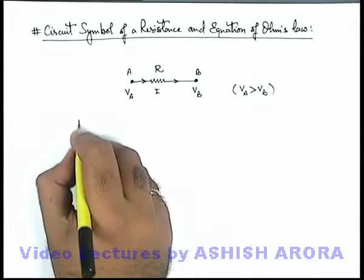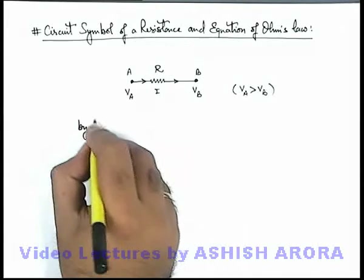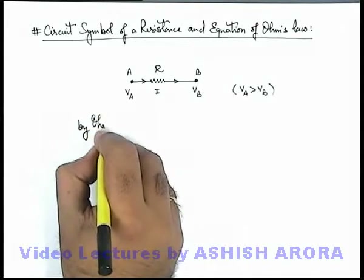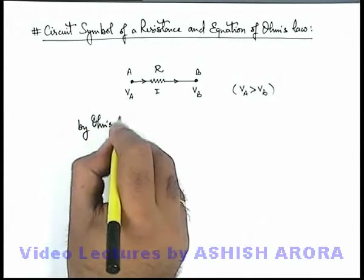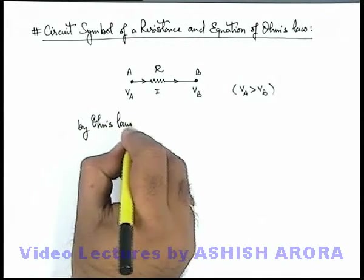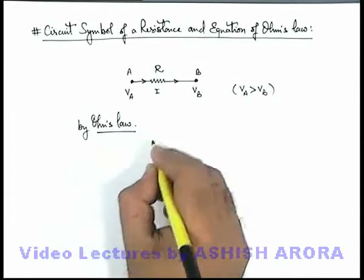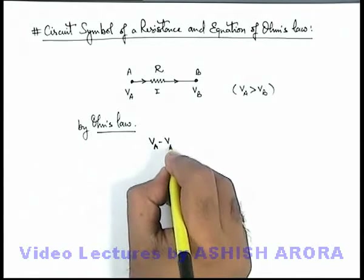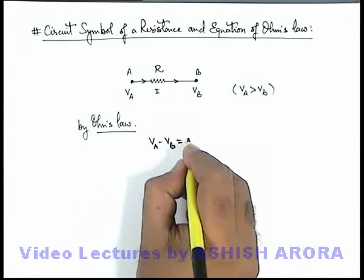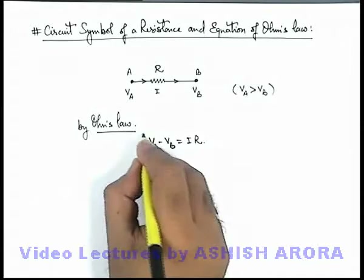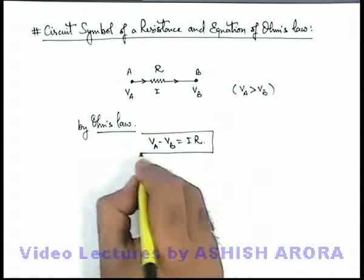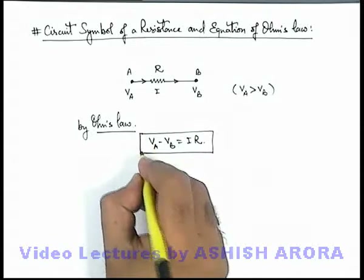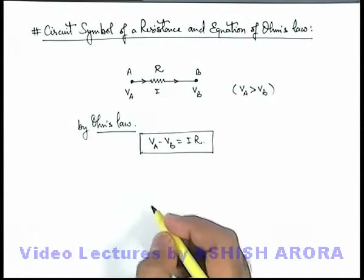Then we can simply write by Ohm's law: we have studied that the potential difference V-a minus V-b can be written as i·R. This is the equation we use for the application of Ohm's law in any conductor.